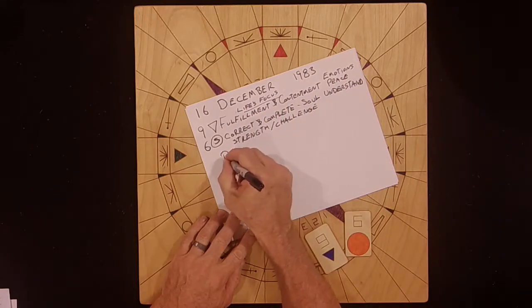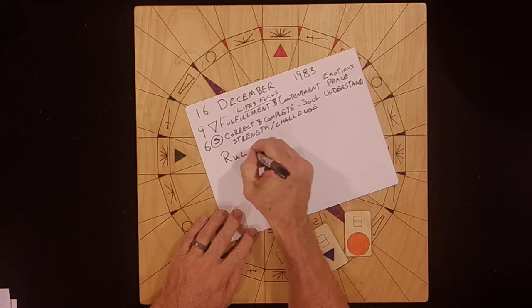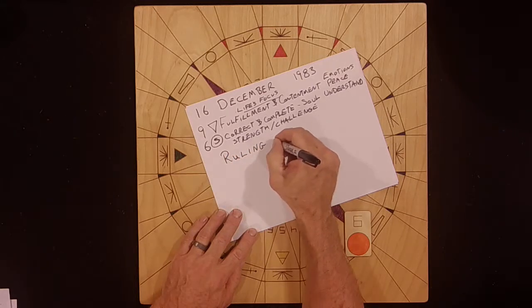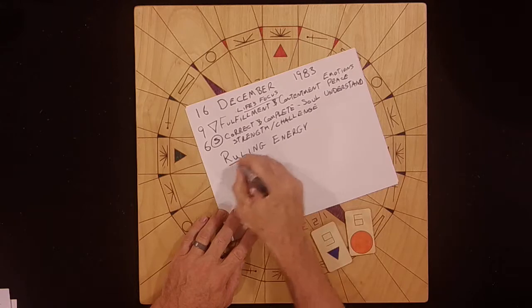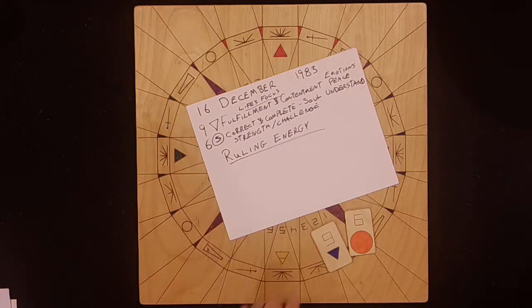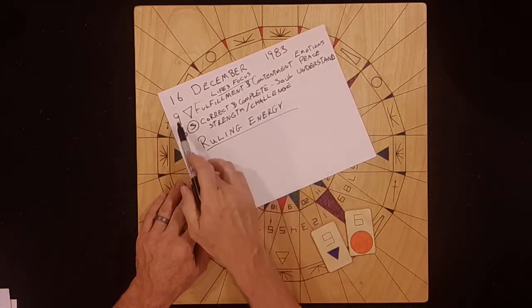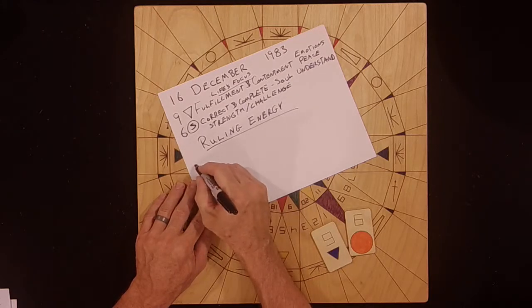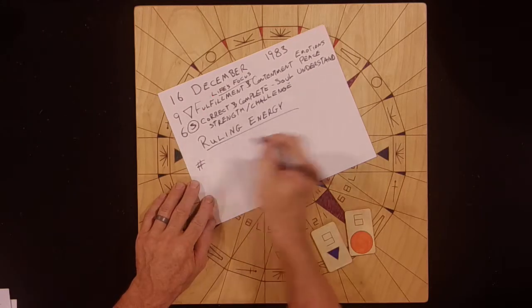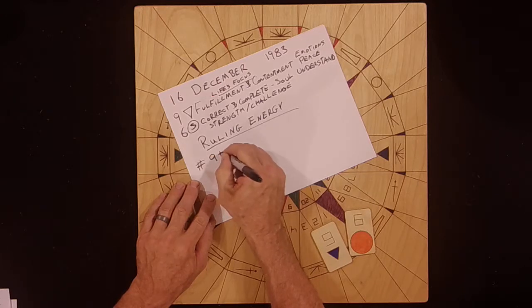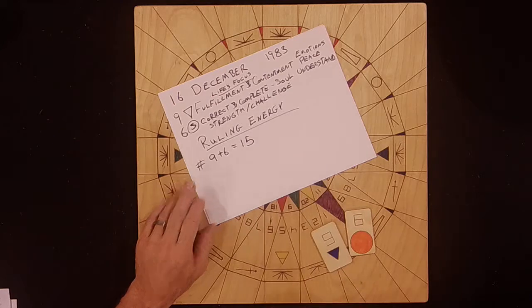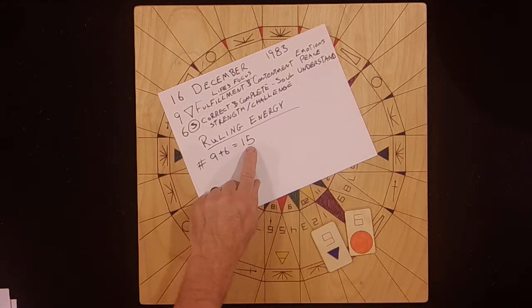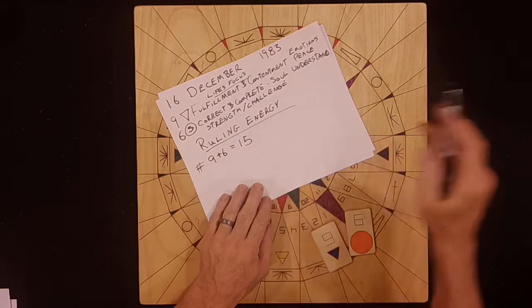So, that's what's going on on the inside. And so, then the ruling energy, or force, if you will, whichever word you want to use, has to do with the combination of these two numbers. So, the numbers, the energy of the numbers, has to do with a 9 plus a 6, which is a 15. The number 15 is in the second set of 9.